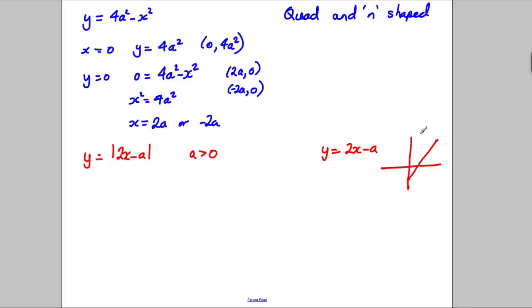It would be a straight line graph like that with gradient 2, but the modulus means that anything below the axis would just be reflected up the axis like that. And it would cross, where would it cross? Well, when y is equal to 0, you'd be solving 0 equals 2x subtract a, and you'd get yourself that x equals a over 2.